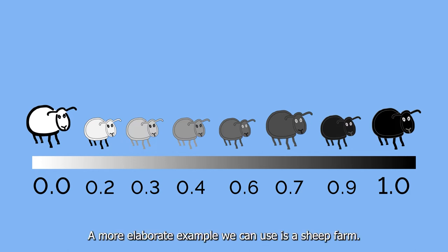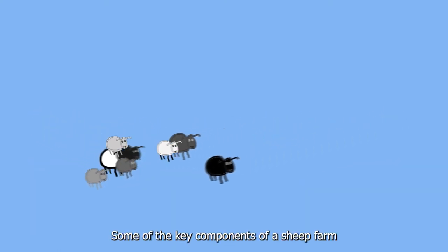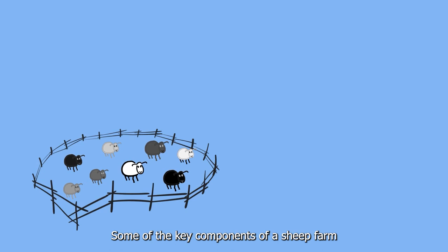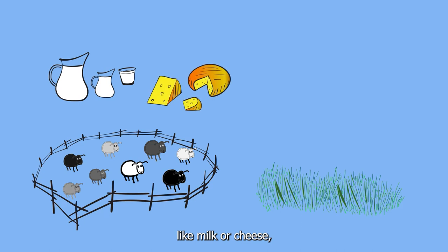A more elaborate example we can use is a sheep farm. Some of the key components of a sheep farm are its livestock, its meadows and pastures, but also the final products of animal farming like milk or cheese, and obviously the herder and their wealth.